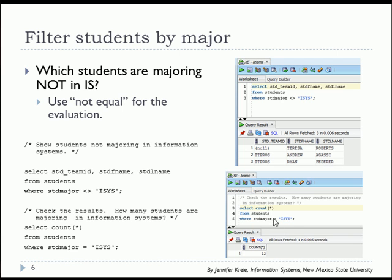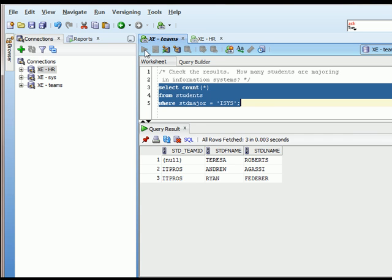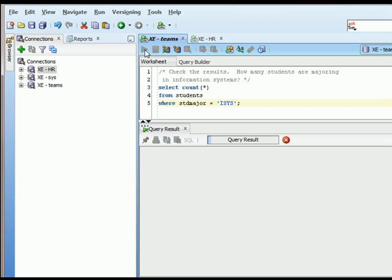So if we do a COUNT of the students who are majoring in information systems, we ought to come up with 12. Let's try that. SELECT COUNT asterisk in parentheses FROM students WHERE student major equals ISIS. We will run that and we'll see that 12, and that's for a total of 15 students.